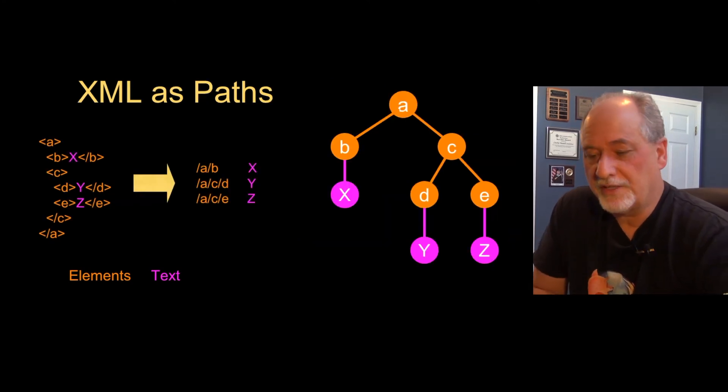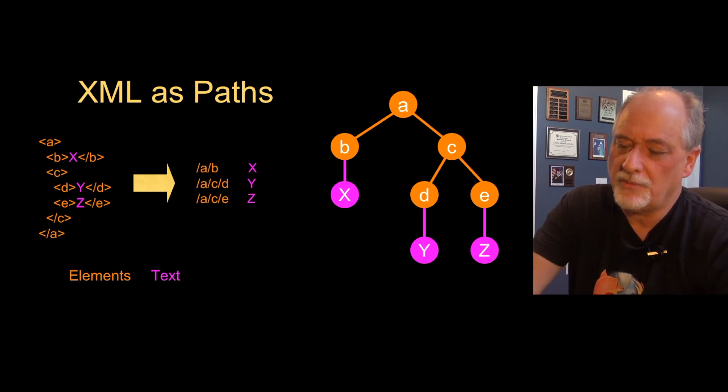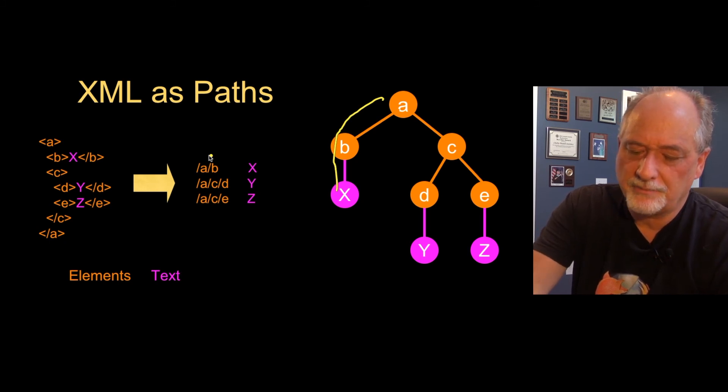You can also think of XML as paths. The easiest way is to look down this tree version and look at the path from the parent. So you go to A, then the child B, and then X. So at position AB, you find X. AB is the path up to the root.